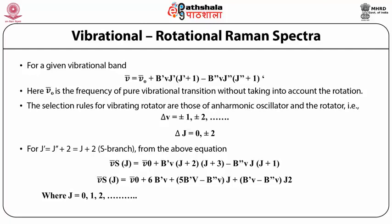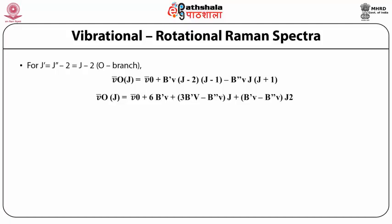From the above equation, these expressions can be written as follows. For J' = J'' − 2 = J − 2, this is the O branch. The frequency for the O branch is: ν₀ + B'(ν)(J−2)(J−1) − B''(ν)J(J+1). This can be further expanded as ν₀ + 6B'(ν) + 3B(ν) − B''(ν) · J + (B'(ν) − B''(ν)) · J², where J = 2, 3, etc.